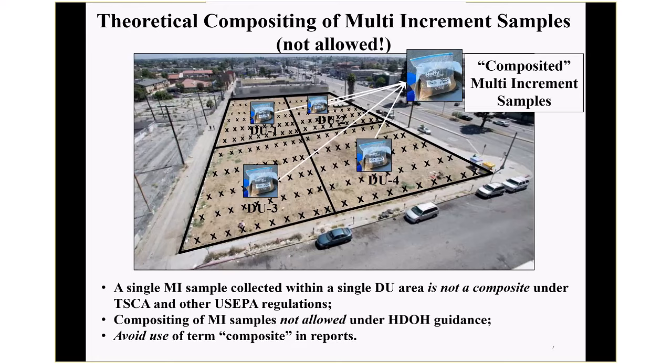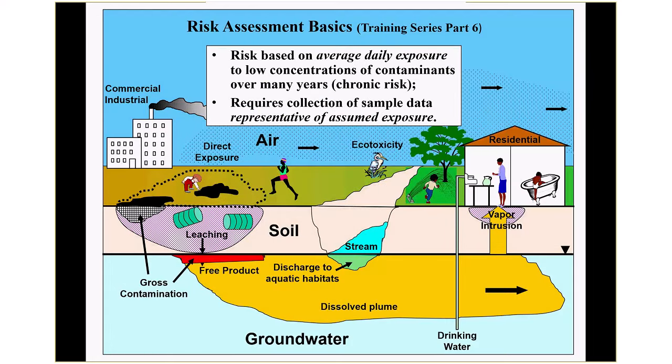A few notes on risk assessment basics. What we deal with in the environmental industry most of the time is long-term exposure to relatively low concentrations of contaminants, referred to as chronic risk. To assess this, risk is based on the average daily exposure over the entire exposure period. We might be looking at contaminants in air, soil, groundwater, or fruit. A key objective is to collect a sample that's representative of your assumed exposure.